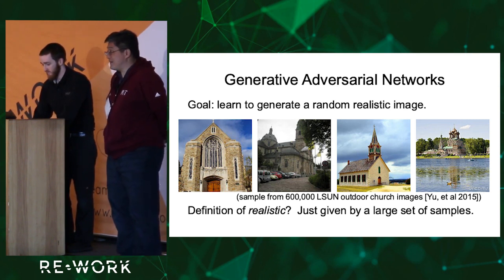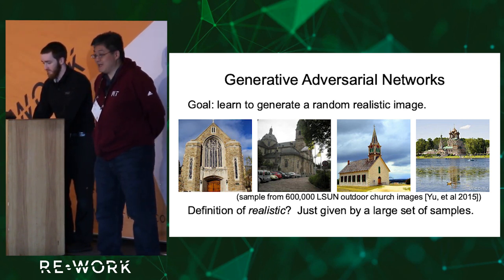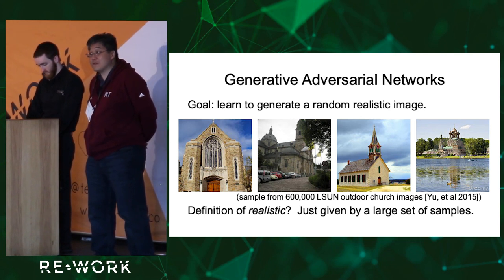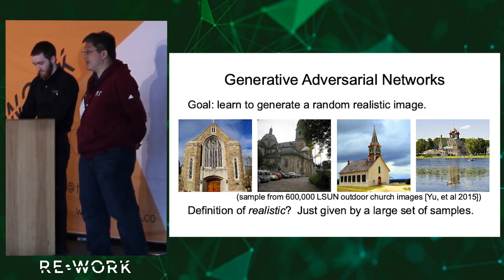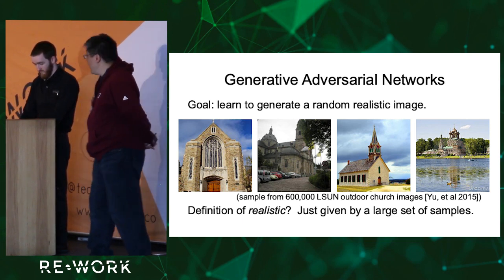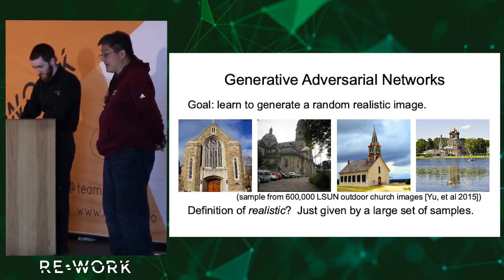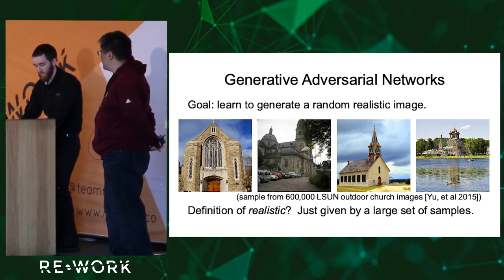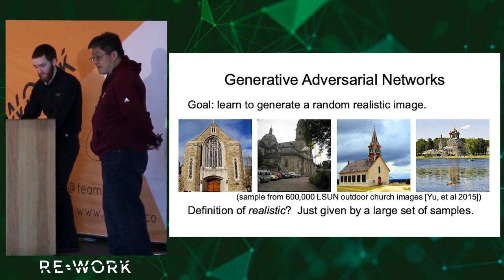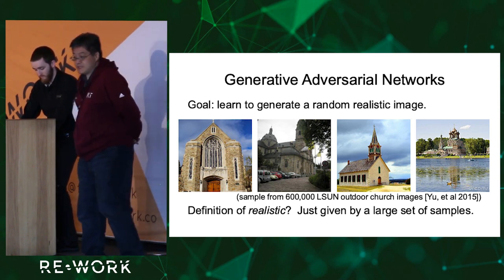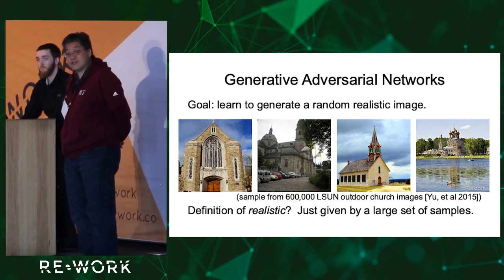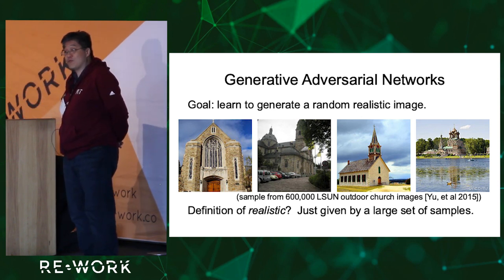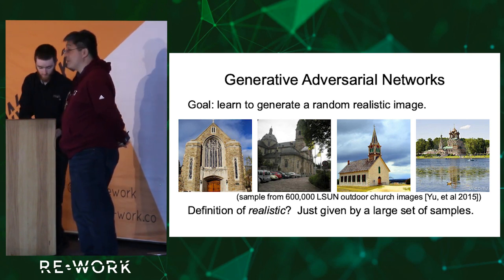Let's talk about what a generative adversarial network is. A lot of you will be familiar, but basically the goal of a generative adversarial network is to generate realistic output. The most successful GANs have been used for generating realistic images. The idea is we want to train a network that can imagine very realistic data — that can produce images that look like real photographs. The main challenge with GANs is we don't have a good definition of real other than just a lot of examples. So we'll take a dataset of example real images as our definition of what it means to be real.